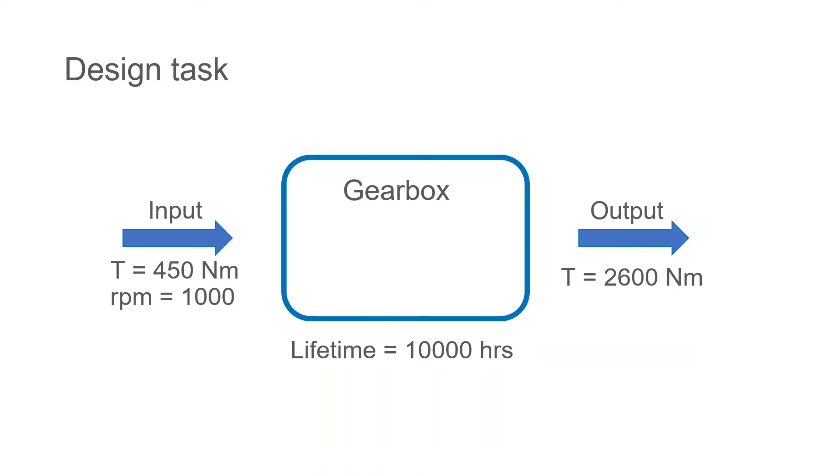Let's move on and use the software to design a gearbox. Here's the design task. It's quite ordinary and simplified in some aspects, but good for example. In inputs we have torque equals 450 Nm with RPM of 1000. In outputs we should reach 2600 Nm and consider a lifetime of gearbox of 10,000 hours.